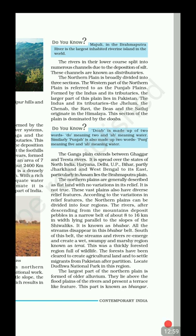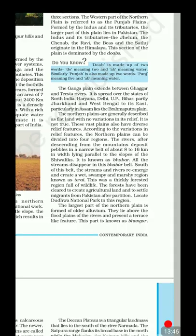After descending from the mountains, rivers deposit coarse boulders in a narrow belt of about 8 to 16 km lying parallel to the Shivalik slopes — this is known as Bhabhar. The name comes from a grass that grows among these big boulders. After Bhabhar, the rivers disappear underground and then re-emerge, creating a wet, swampy, marshy region known as Terai. Dudwa National Park is located in the Terai region.